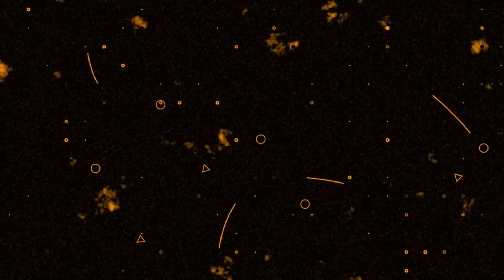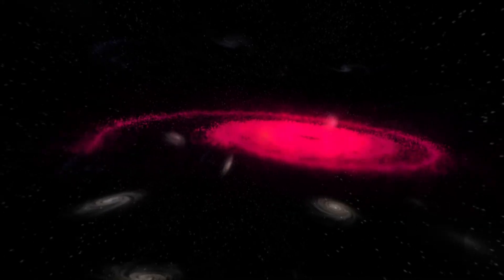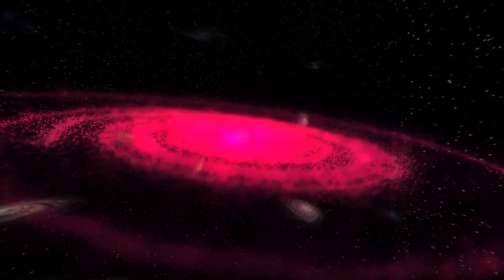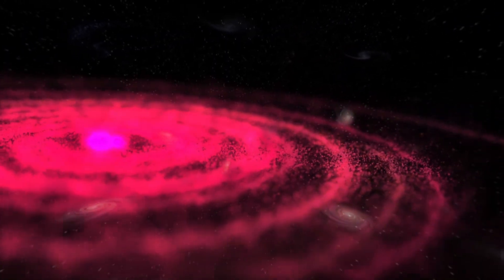To put this into context, consider the Voyager 1 probe launched in 1977. It traveled at a speed of 38,000 miles per hour and did not leave the solar system until 2012, meaning it spent 35 years just to exit our solar system.